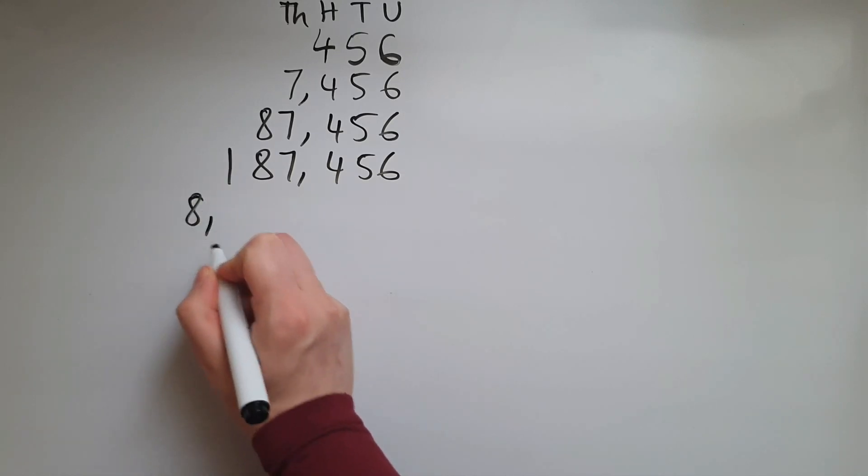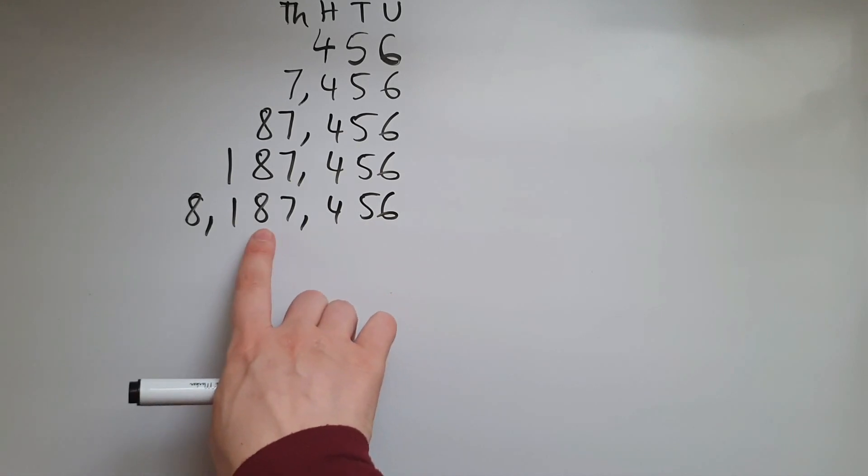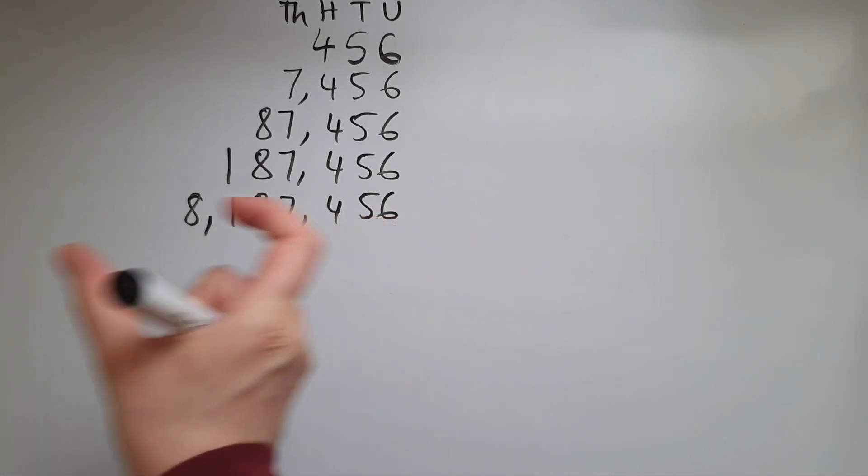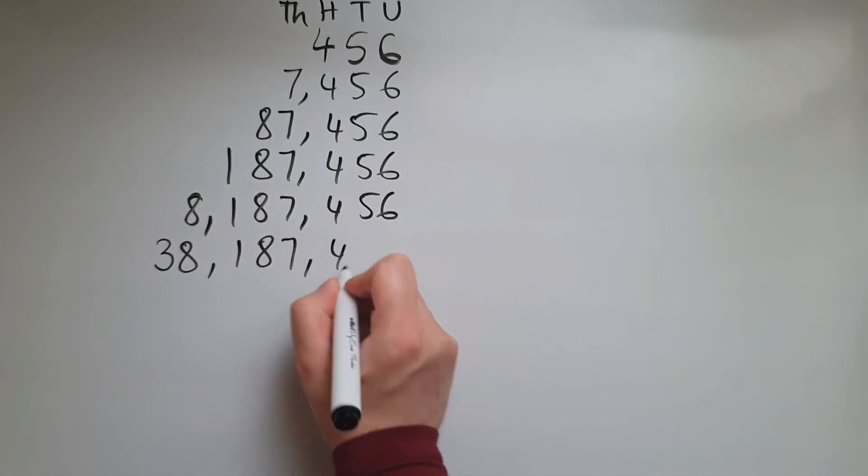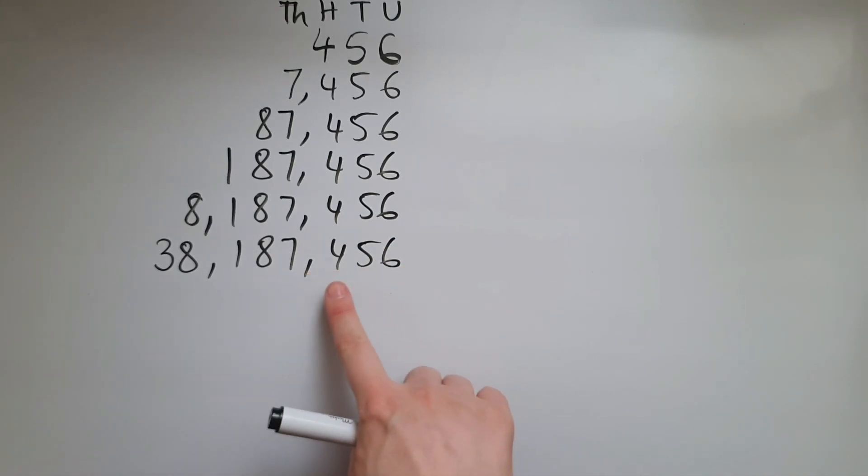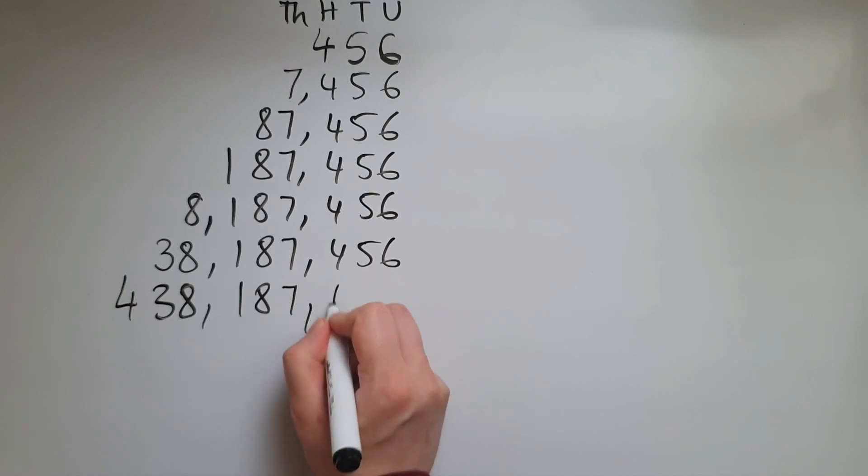If I add another digit, look at how we've read them 123, 123, and so on. And that pattern remains the same. So separating them into threes. So now I read this number as 8,187,456. If I add another digit, 38,187,456. 438,187,456.